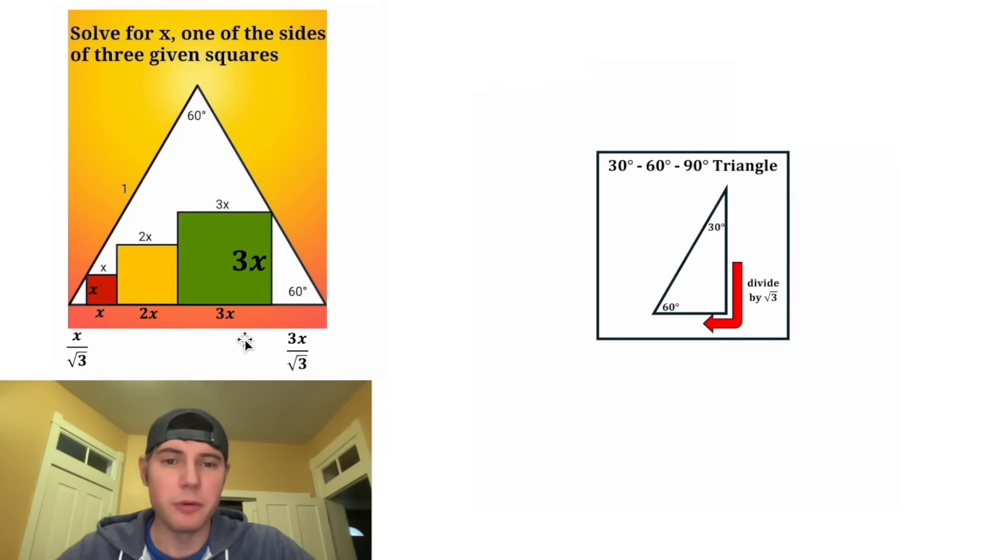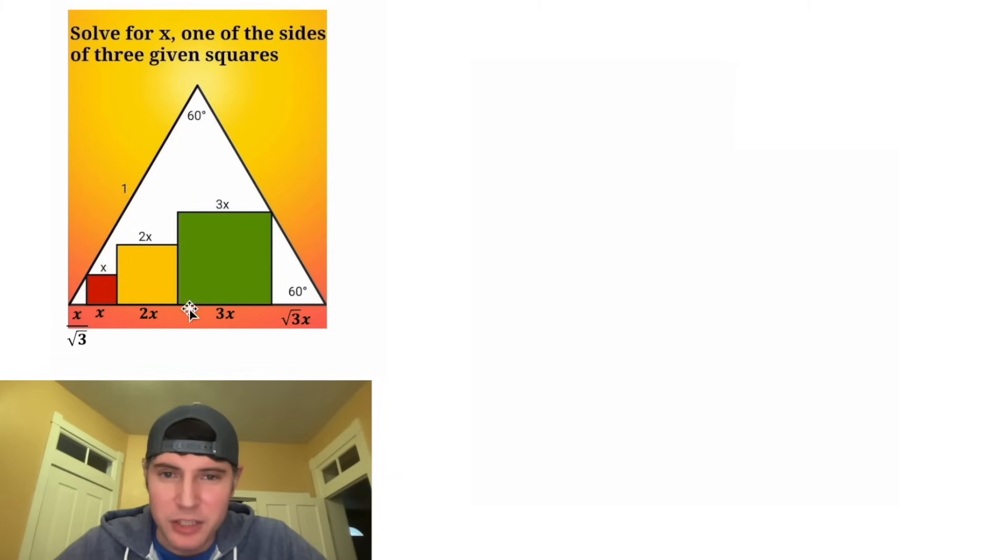We're going to do 3X divided by root 3. And then let's rationalize the denominator. Let's multiply top and bottom by root 3. Root 3 times root 3 is 3. And then this 3 and this 3 can cancel each other out. So we end up with square root of 3X. And then we could rationalize the denominator on this side, but I'm kind of curious what happens if we don't.